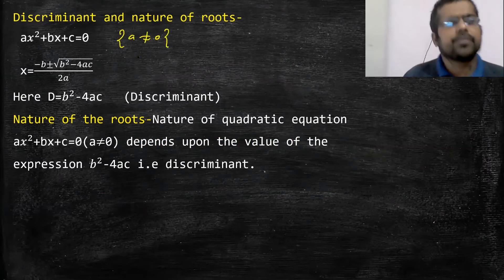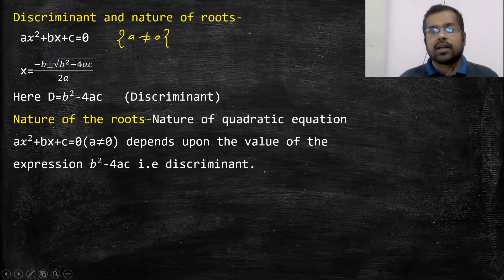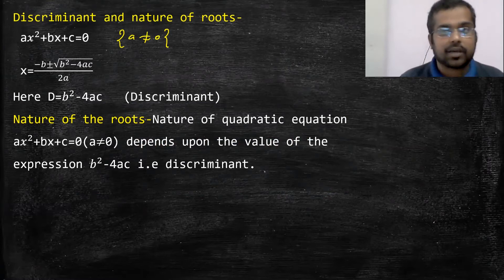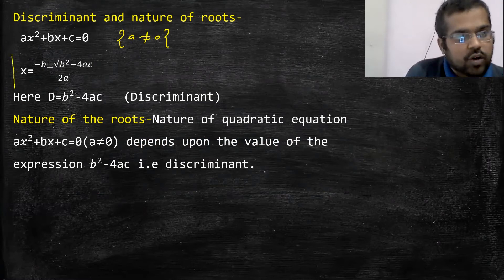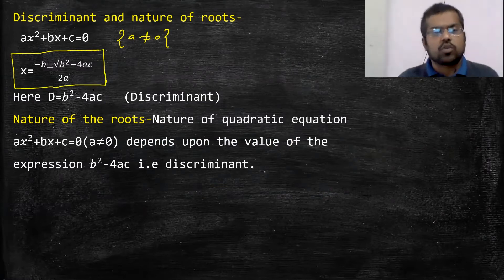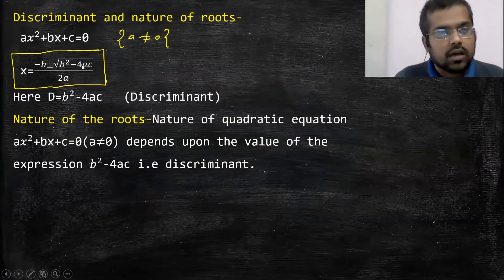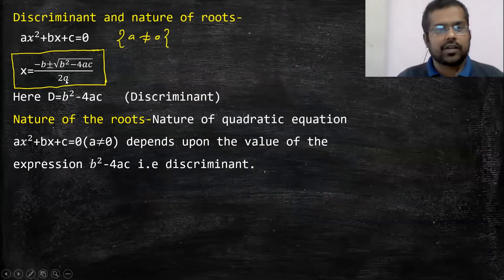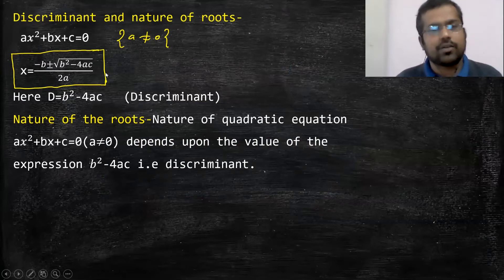Quadratic equation को solve करने के different methods में third method था जिसका नाम था Sridharacharya method — formula method भी बोलते थे। Formula method में एक formula होता था जिससे हम x की value find out करते थे। Positive लेते थे तो एक value आती थी, negative लेते थे तो other value आती थी।